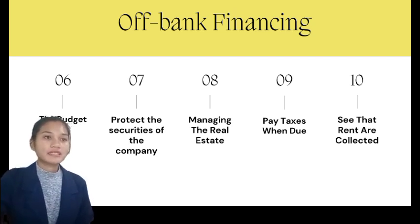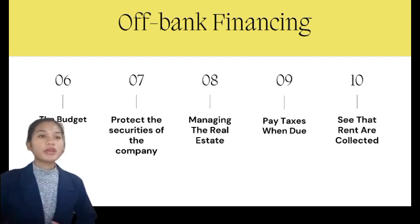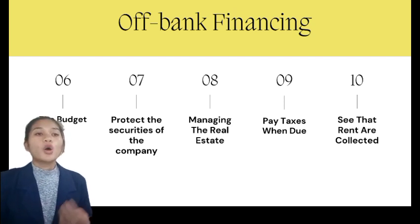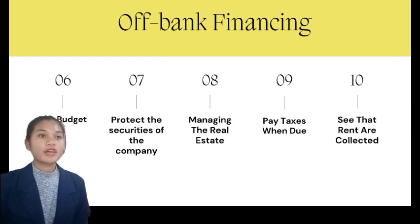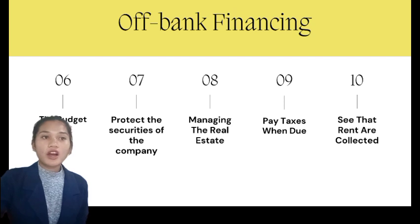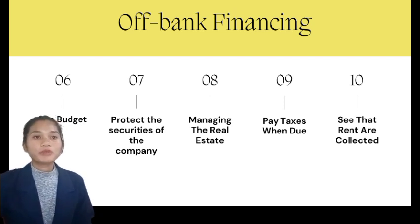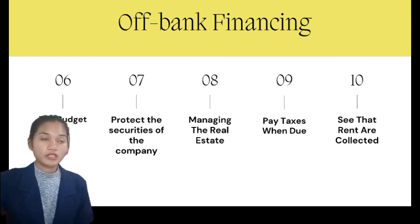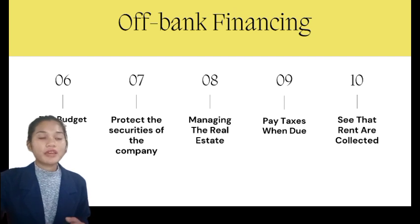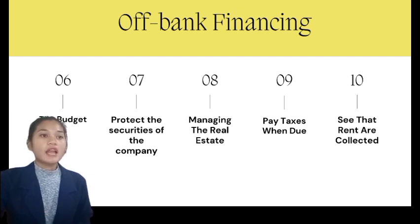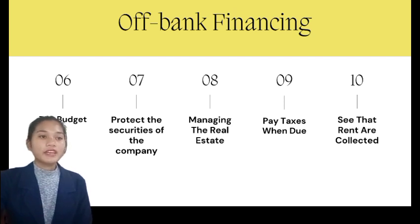The ninth is to pay taxes when due. Collection bills may be misplaced in the mail or delivered in error, but that is no justification for not paying them. When it comes to purchasing invoices, questions should be asked so that bills may be paid in time to benefit from each discount. The tenth is to see that rents are collected. A solid follow-up mechanism is necessary for the collection of rent from the company's own real estate in order to receive the money when it is due. Some tenants pay their rent on time; however, some tenants put off paying for a variety of reasons. Less outstanding rent will be owed to the landlord who follows up diligently every day after the end of the month.